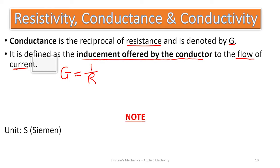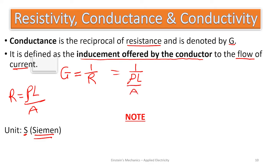We can also do some mathematics here. Since R = ρL/A, we can substitute to get G = A/(ρL). This gives us the conductance formula in terms of resistivity, length, and area.